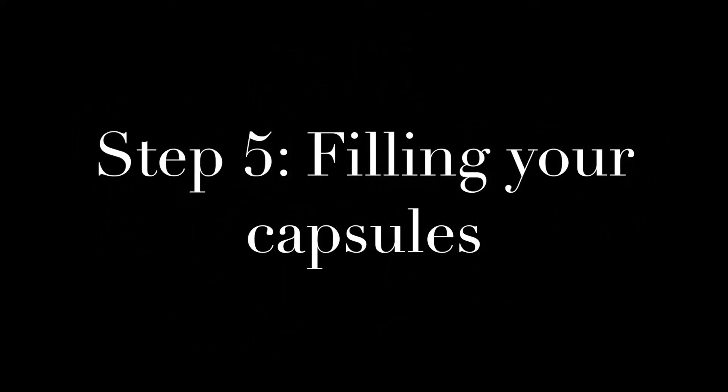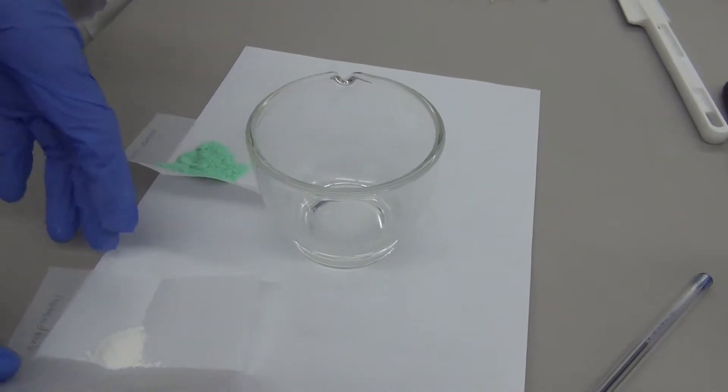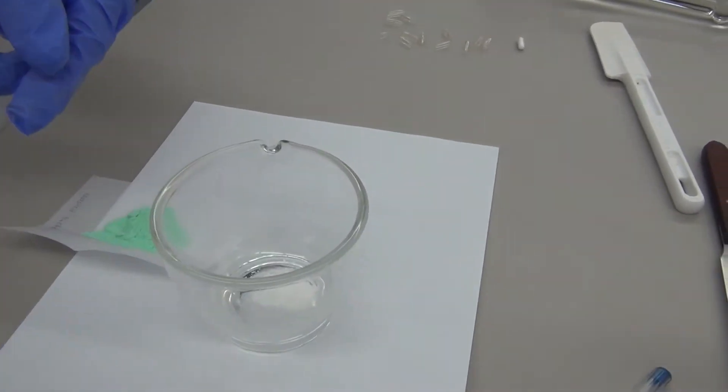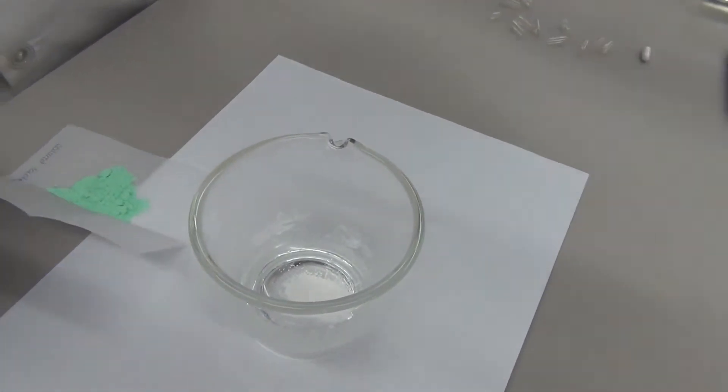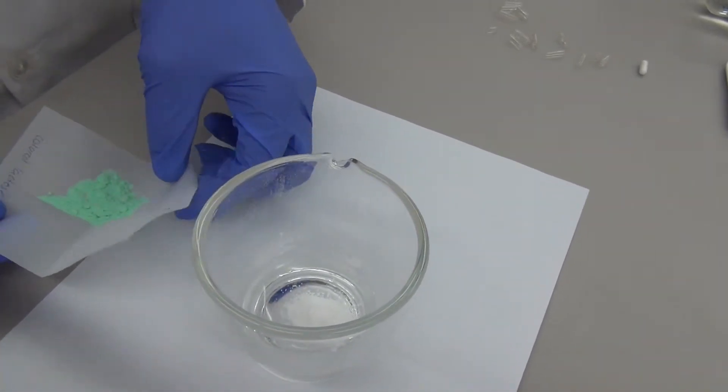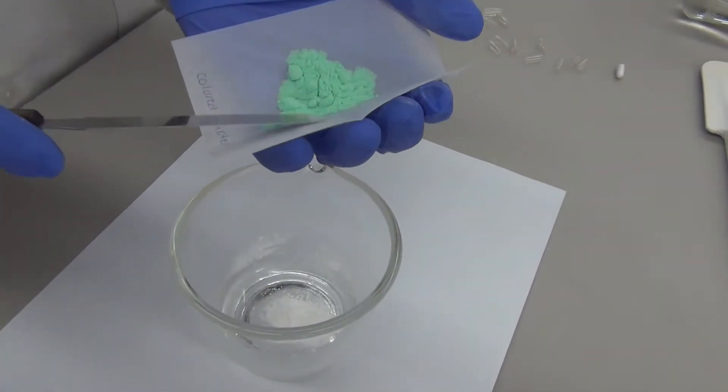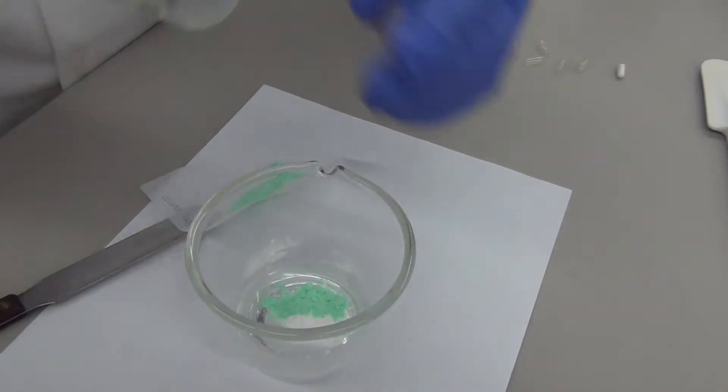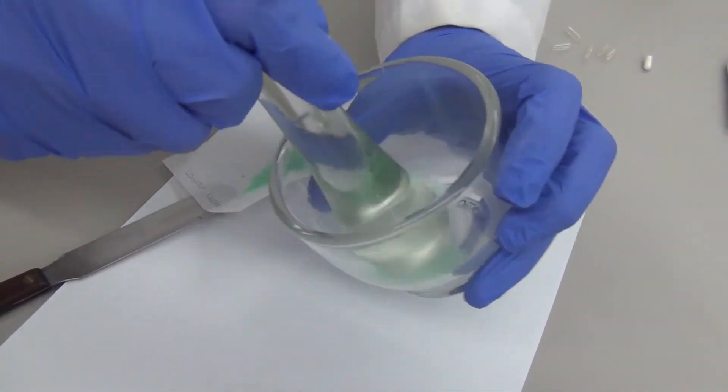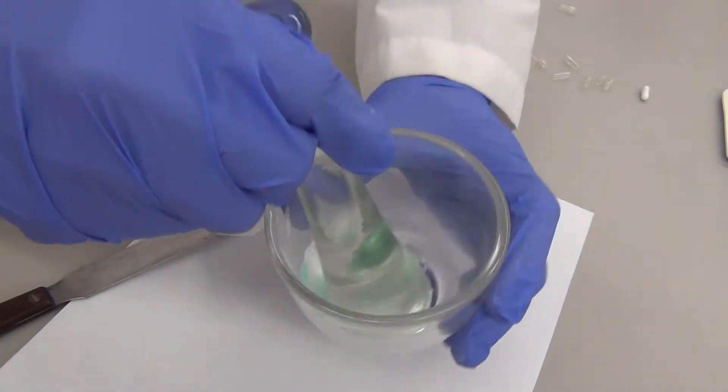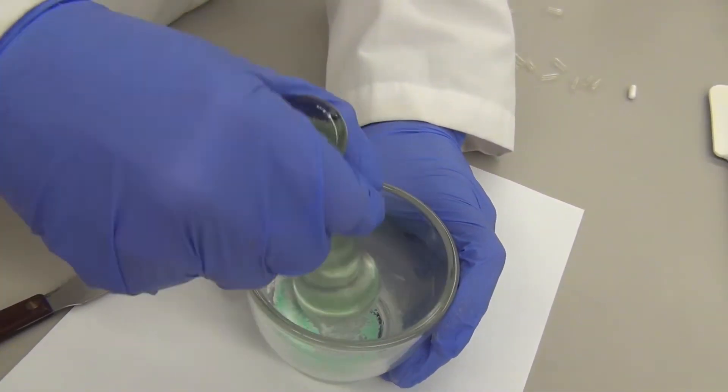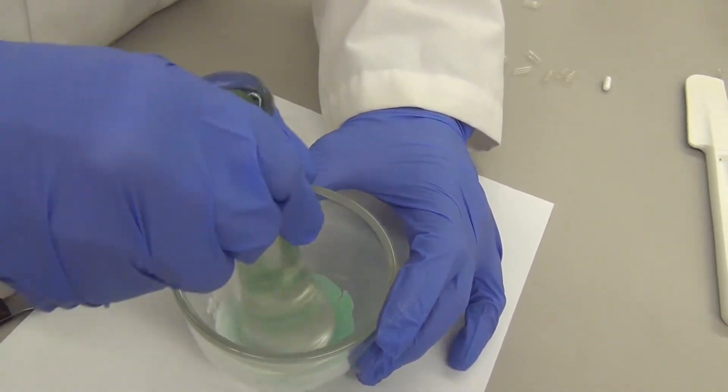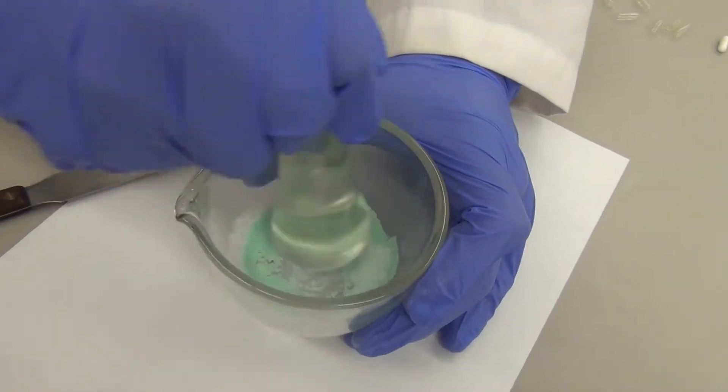For step five you are going to fill the capsules. Geometrically combine your drug with the colored lactose. Add the drug to the glass mortar and then slowly add the colored lactose in and mix thoroughly. You want to try and get a uniform distribution of the drug.